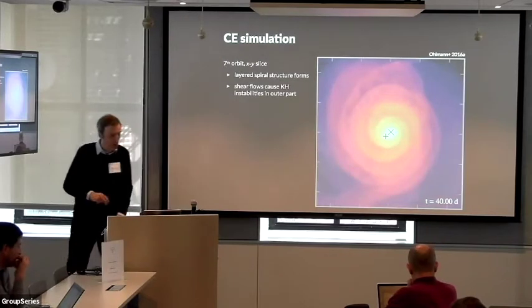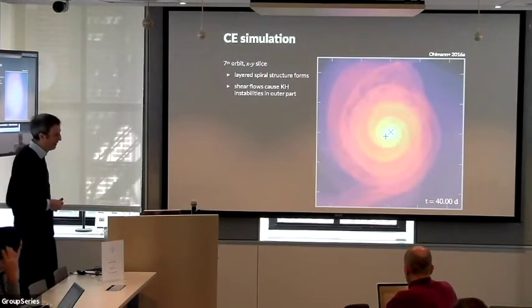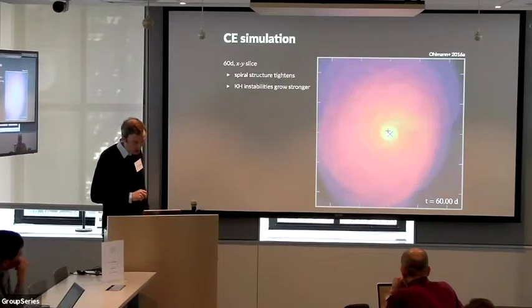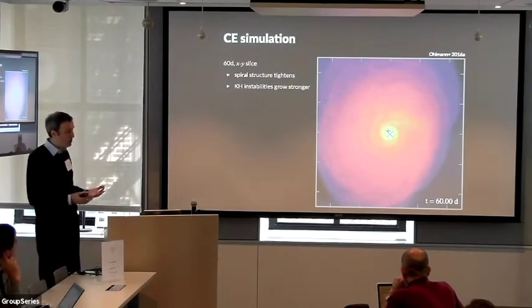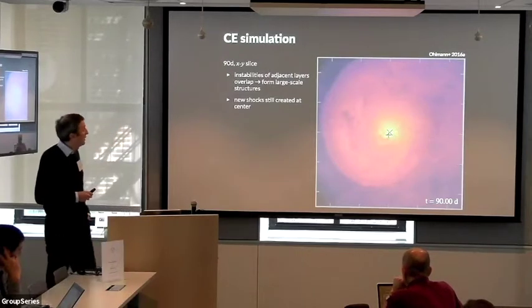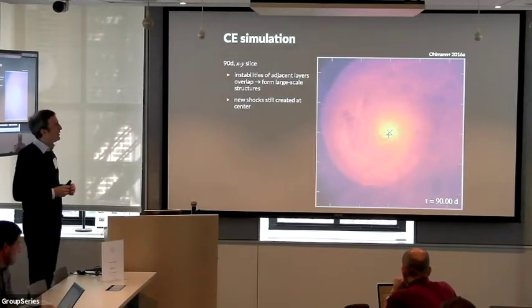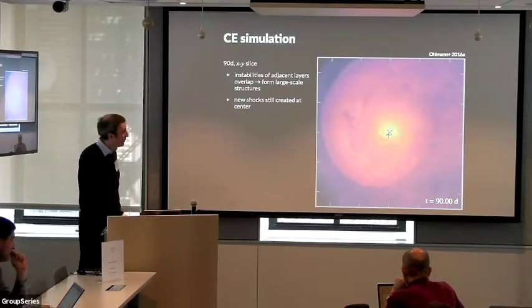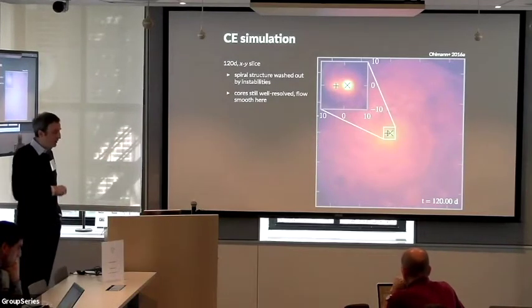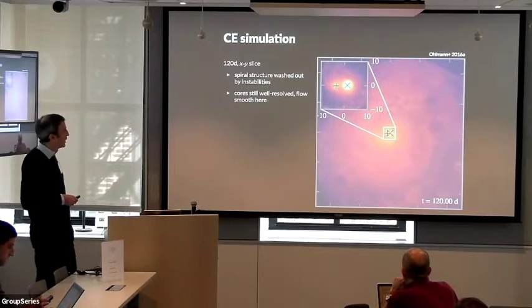And in the second orbit, the red giant core structure takes over the tidal arm of the companion. And later on, after a few orbits, a spiral structure forms, shear flows in the outer layers where the flows are subsonic lead to Kelvin-Helmholtz instabilities. And you see these Kelvin-Helmholtz features appearing here. Later on, the Kelvin-Helmholtz instabilities become stronger and the spiral structure tightens. And then, finally, the instability in adjacent layers starts to overlap. So we form large-scale instability patterns that now dominate the entire morphology of the envelope, but in the center, still the spiral structure is generated by the two orbiting cores. And finally, when we end our simulation, the spiral structure is completely washed out by the instabilities. The cores are still resolved and the flow between them is smooth.